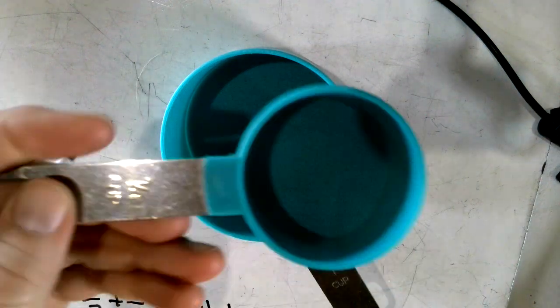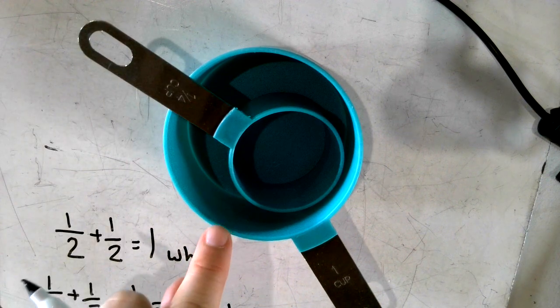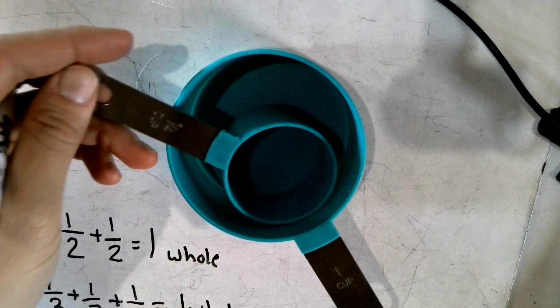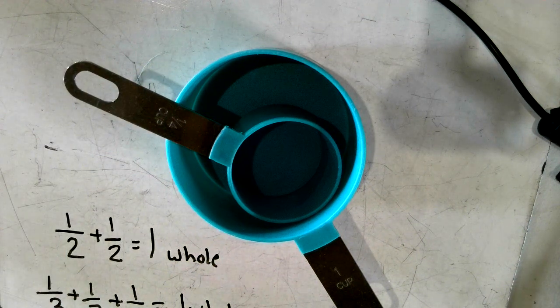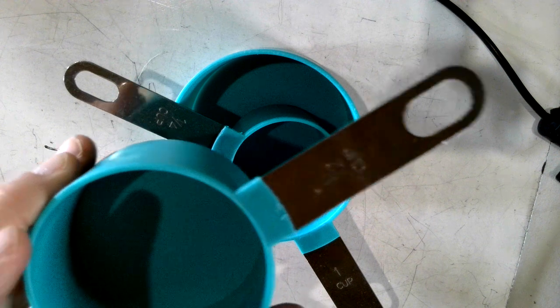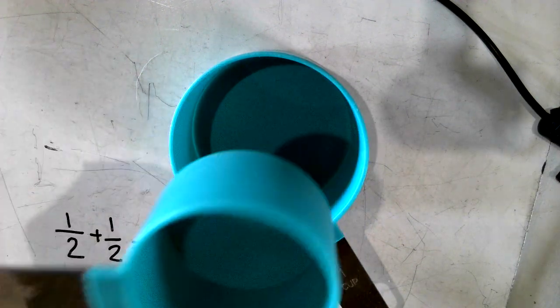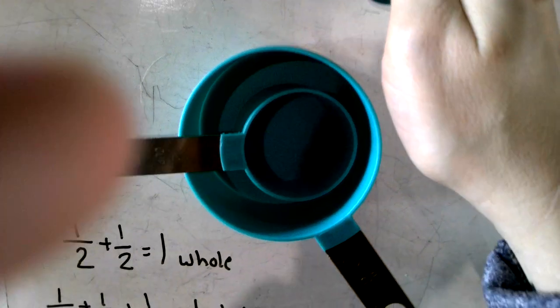It takes this small one, four of these to make one of those big cups. So if somebody asks you to make a half cup and your half cup, this one, is dirty, you could use two of the fourth cups. See, two fourth cups...